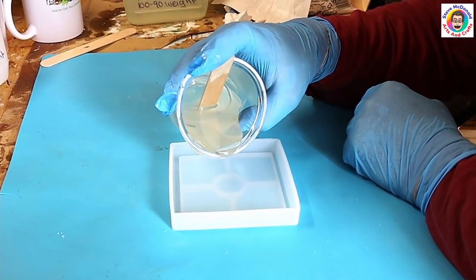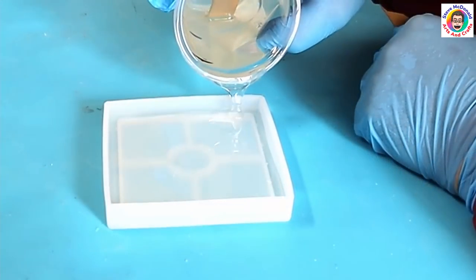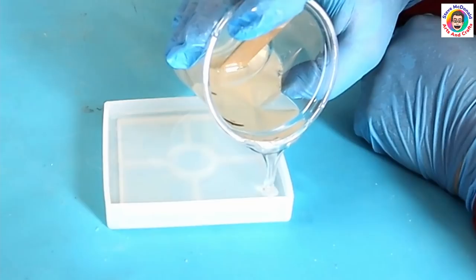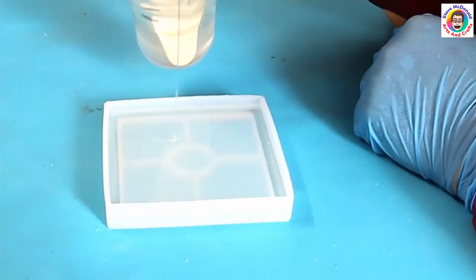I've got my resin mixed up and I'm going to be pouring it in here. As you can see, I'm using a fairly thick resin and I'm only pouring it about halfway up or just below halfway up of this mold.